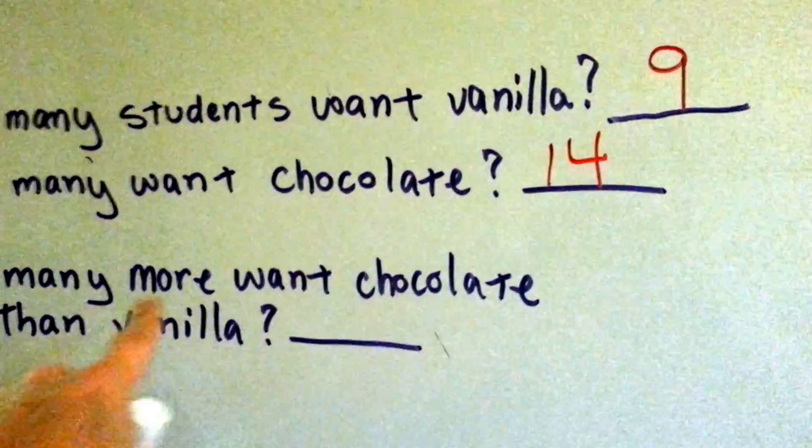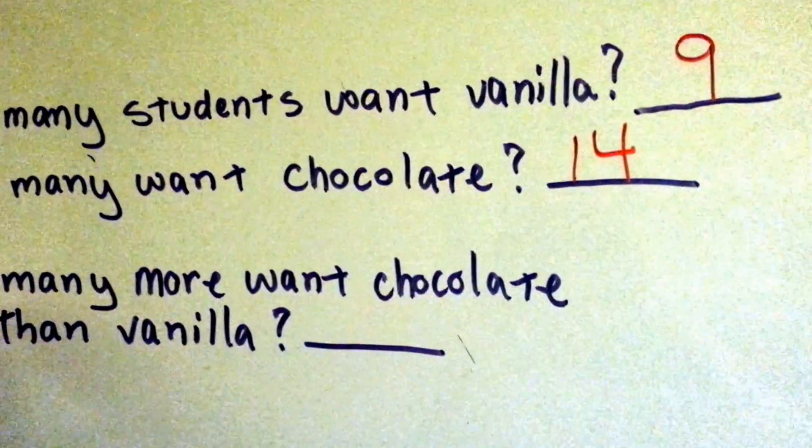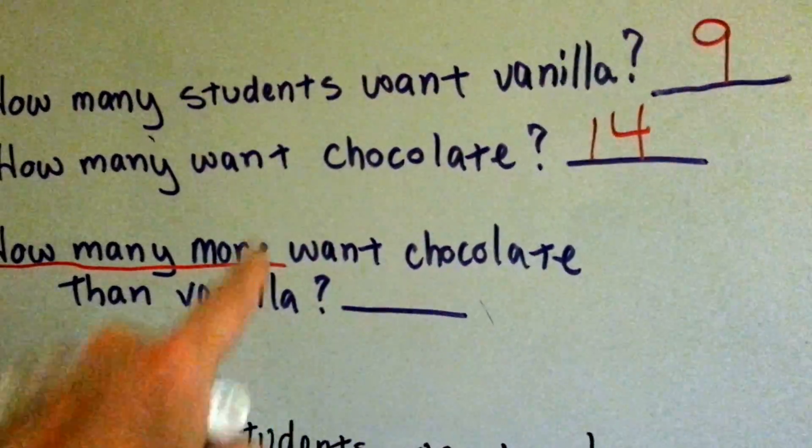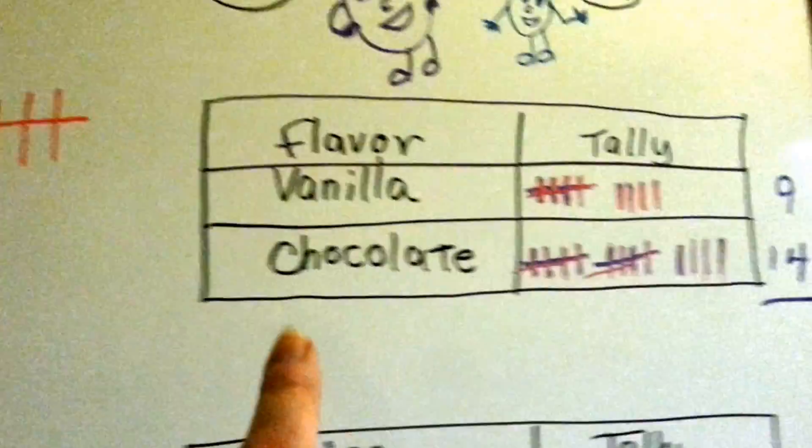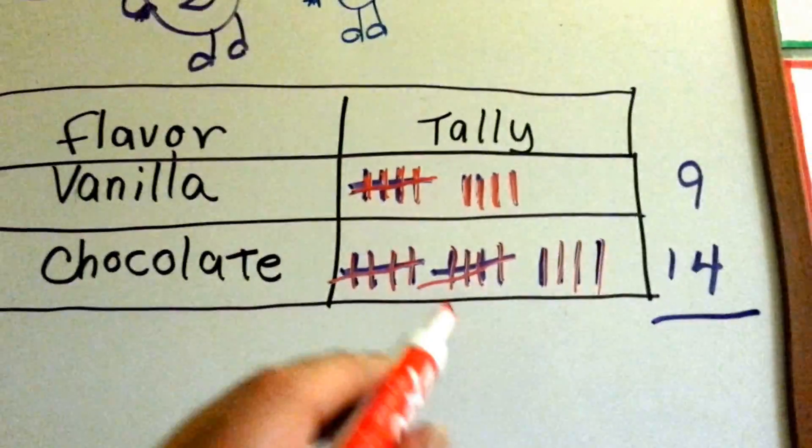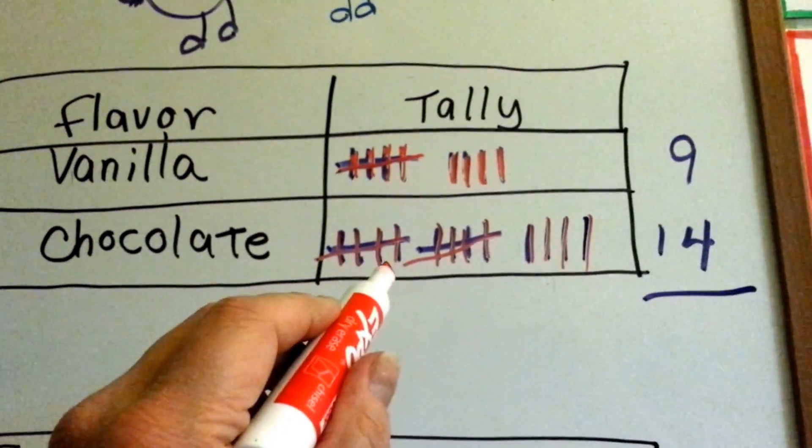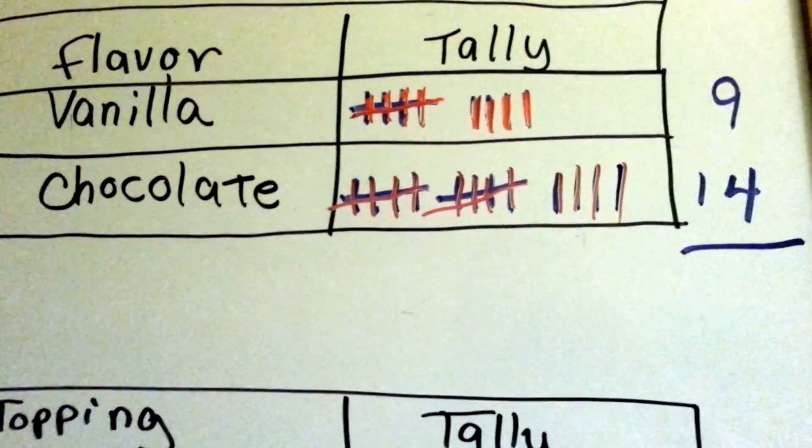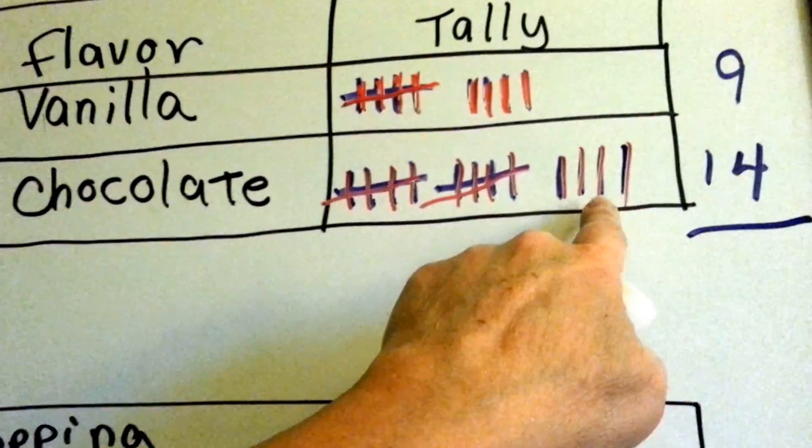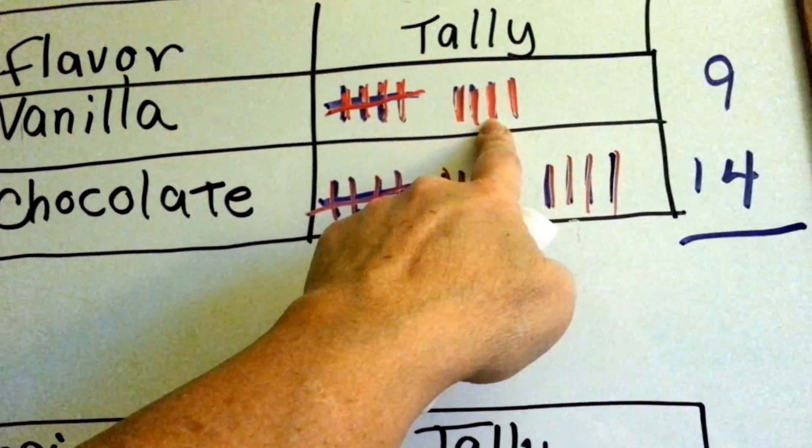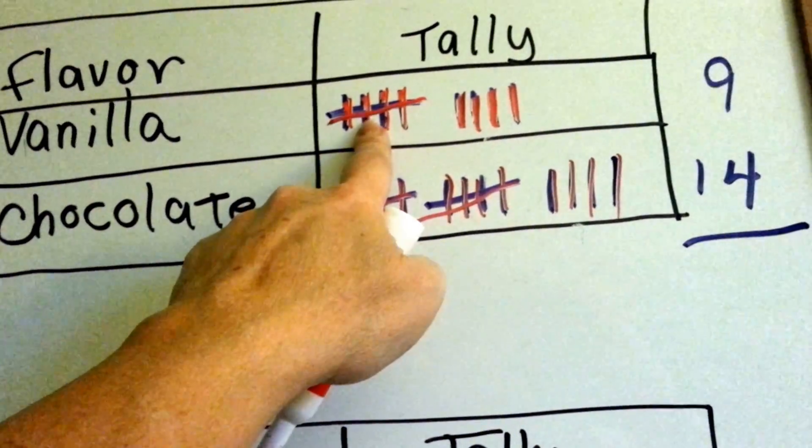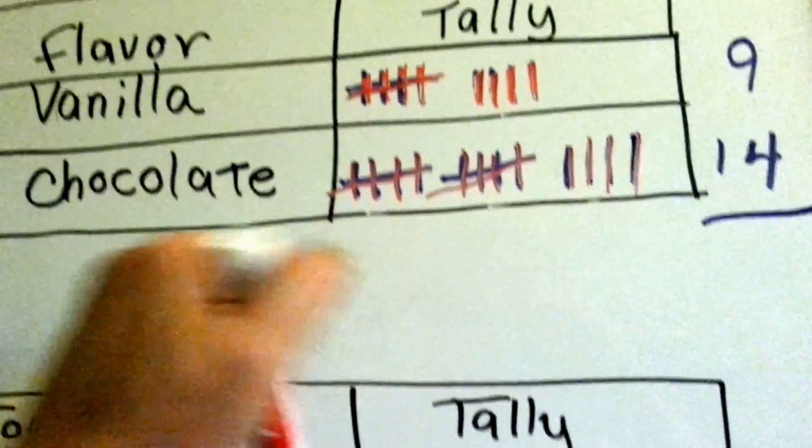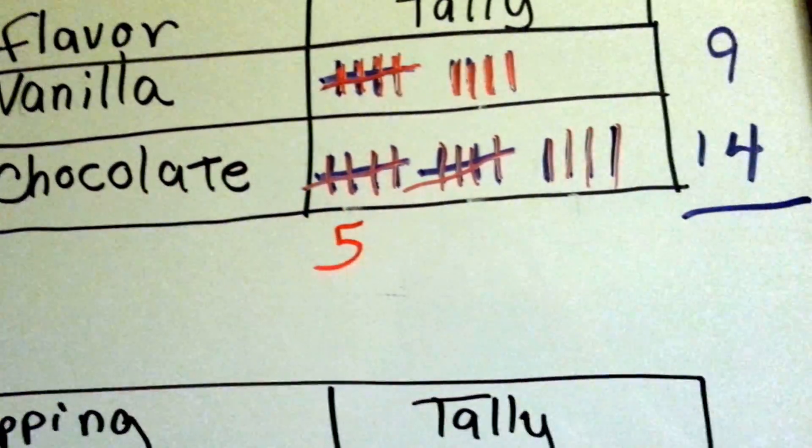How many more want chocolate than vanilla? What's the difference between the kids who want chocolate and the kids who want vanilla? Well, there's 14 chocolates and 9 vanillas. What's the difference between them? Can you see it right off? There's 4 tally marks here and 4 tally marks here. There's 1 group of 5 here and 1 group of 5 here and then this one's all by itself. So right away you can see that it's 5.